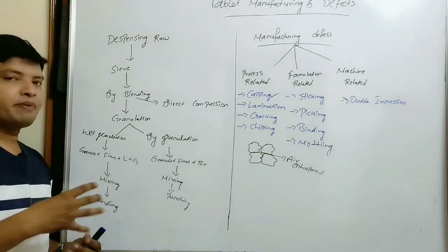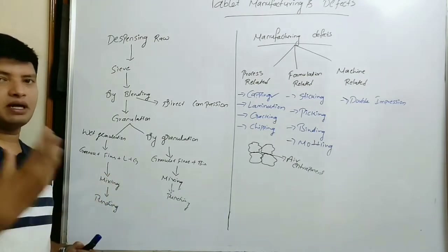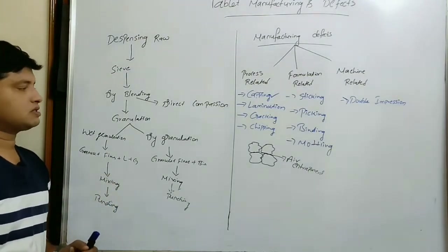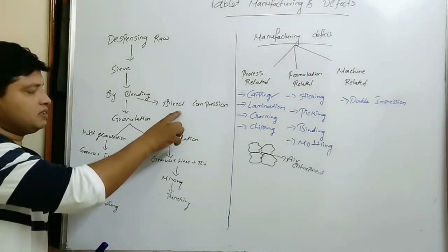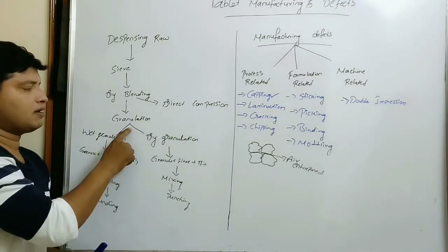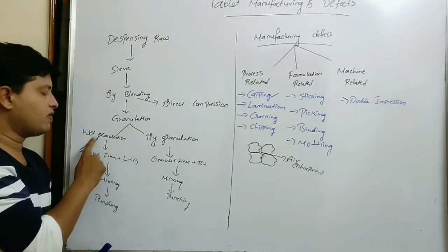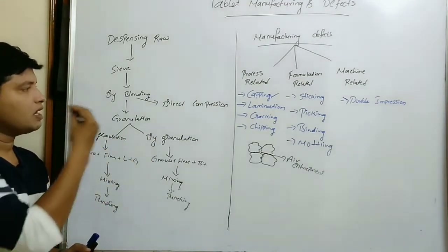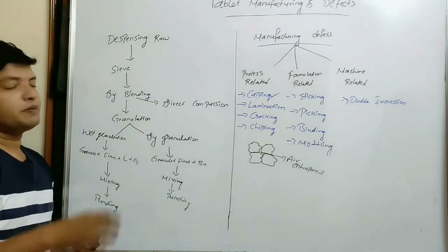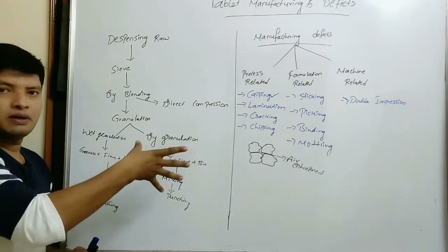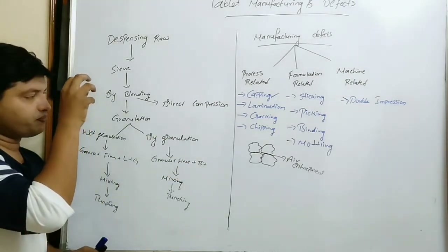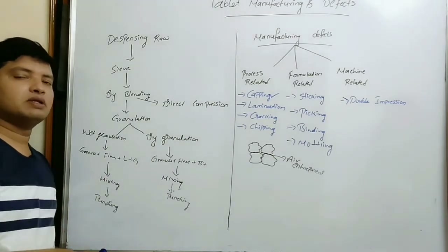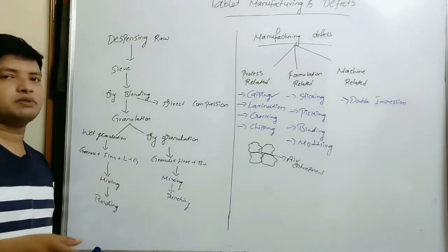After mixing, depending on the type of tablet compression, we need to carry out one of three processes: direct compression or granulation. In granulation, we have wet granulation and dry granulation. Regarding the granulation process, I have already explained it in a previous video — I will give that link in the description or in the icon.